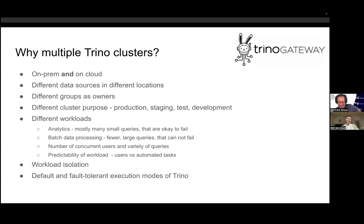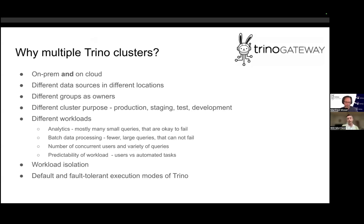Now that you know what Trino is, you might wonder: why would I have more than one Trino cluster? If it can connect to all these data sources, why would I ever need more than one? Well, there's a variety of reasons. You might have data in different places, and you might want to keep your processing — Trino is a query engine at its core — close to your data. Maybe you've got some environments on-prem and some on the cloud.